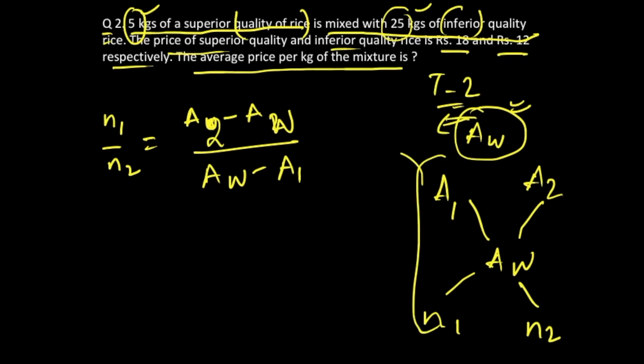This is nothing but the same equation. So we know this is 5, this is 25. We are considering n1 to be superior quality and n2 to be inferior quality. So a2 is, or in fact since we are considering the other way round, it is 18 minus the average value divided by average value minus 12.